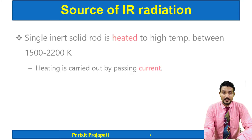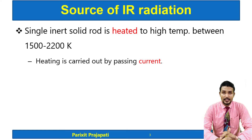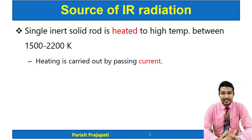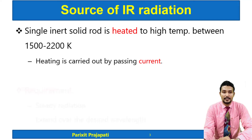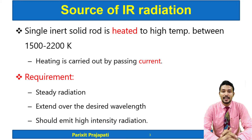The source of radiation needs to provide IR radiation. It is a solid inert solid rod heated at high temperature between 1500 to 2200 Kelvin by passing electrical current. When heated, it produces energy in the form of heat as well as radiation, and that radiation is IR radiation. The ideal requirements of any IR radiation source are that it should produce continuous and steady radiation and extend over the desired wavelength.